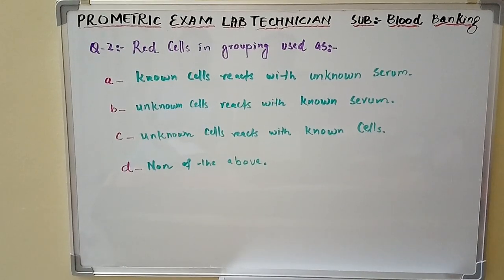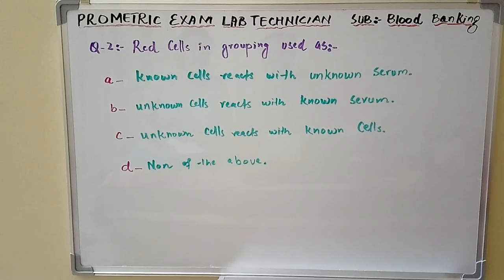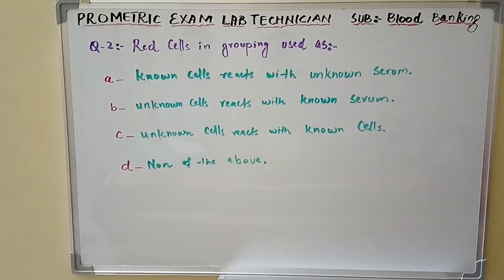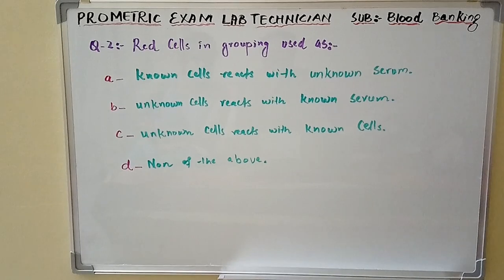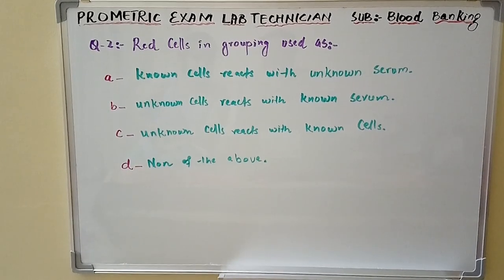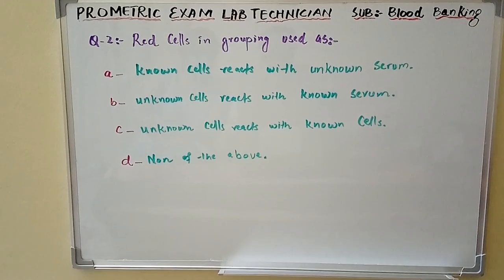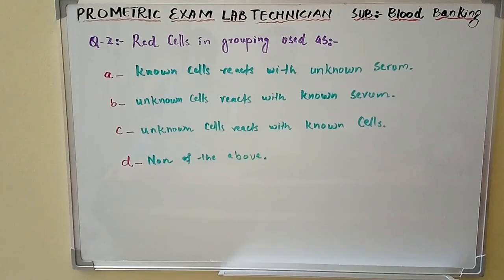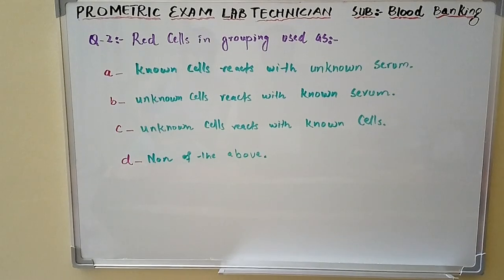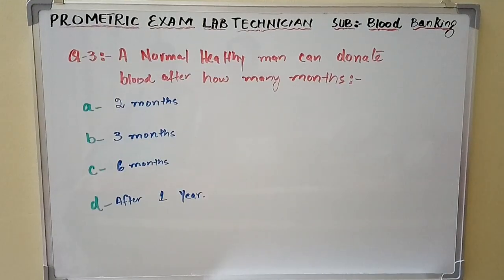Option A: known cells react with unknown serum. Option B: unknown cells react with known serum. Option C: unknown cells react with known cells. Option D: none of the above. Question number three: A normal healthy man can donate blood after how many months?